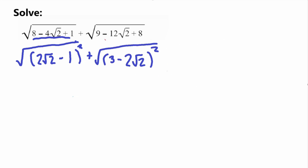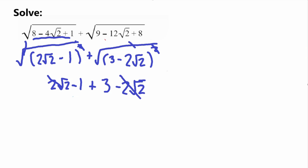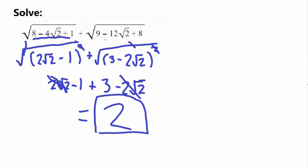Now we've rewritten both values as perfect squares, so we simply cancel the outer square roots with the corresponding squares. This leaves us with 2√2 minus 1, plus 3 minus 2√2. Now simple algebra: 2√2 and negative 2√2 cancel out to make 0, leaving us with negative 1 plus 3, which equals 2. That's our final answer. Thank you for watching, I hope you enjoyed it, and see you next time!